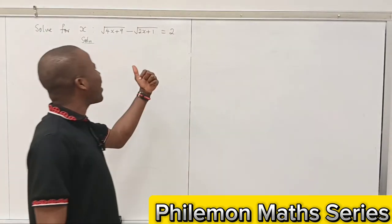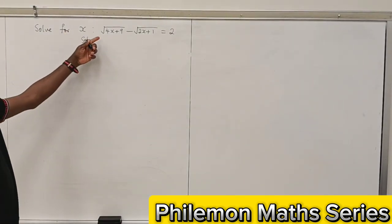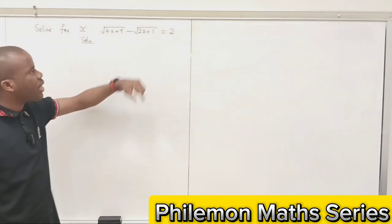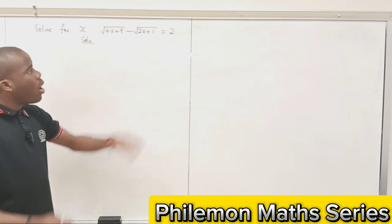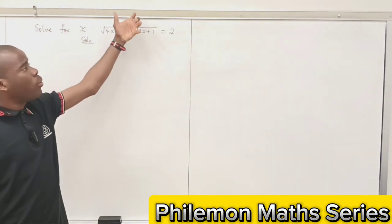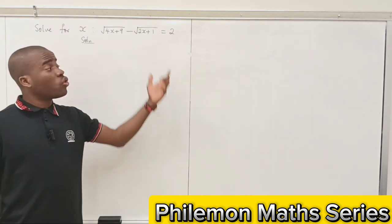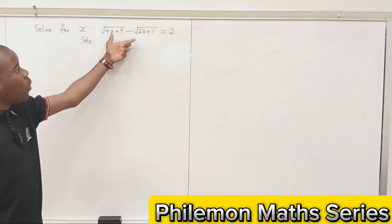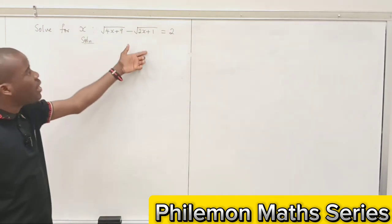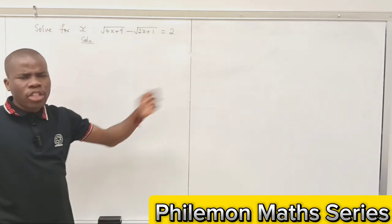Hello, let's solve this together. We are asked to solve for x, that is to find the value of x for which this equation is satisfied. One way to do this is to take this to the right-hand side, square both sides and then find the value of x. Another interesting way we can solve this is to equate the conjugate of this to a constant and then find the constant, substitute, and then find the value of x. Let's go through that route.